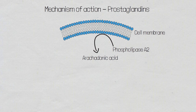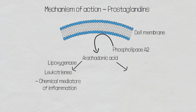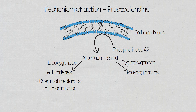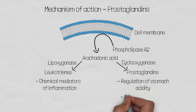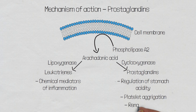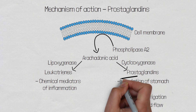Arachidonic acid will then take one of two pathways. If the enzyme lipoxygenase acts upon arachidonic acid, it will convert it into leukotrienes, which are responsible for inflammatory effects such as bronchospasm, chemotaxis, and increased capillary permeability. If arachidonic acid is acted upon by the cyclooxygenase enzyme, it will be converted into prostaglandins. Prostaglandins play an important role in the regulation of gastric acidity, platelet aggregation, and renal blood flow. In particular, prostaglandin E1 plays an important role in the regulation of gastric acidity.